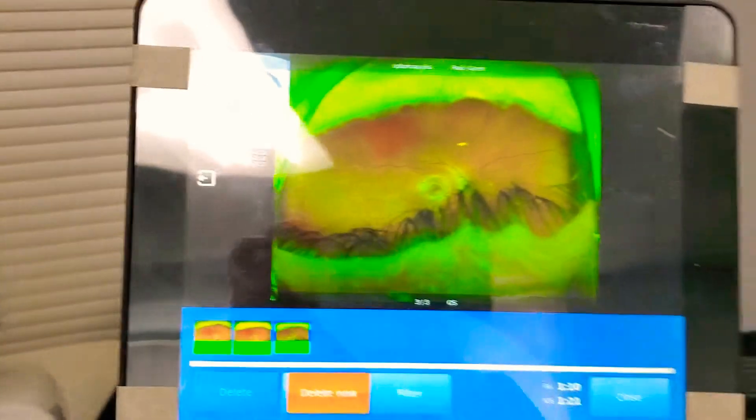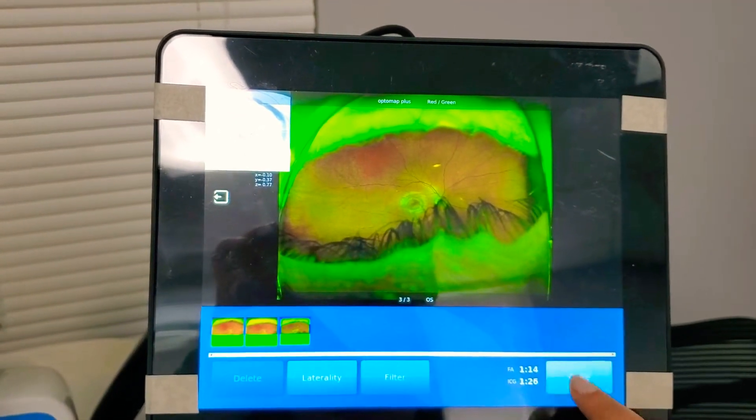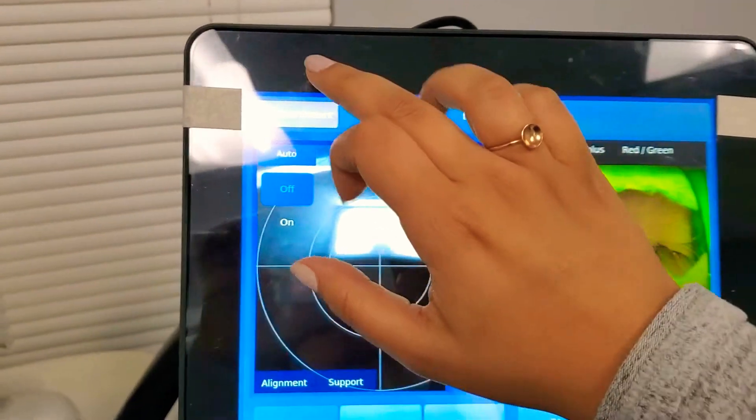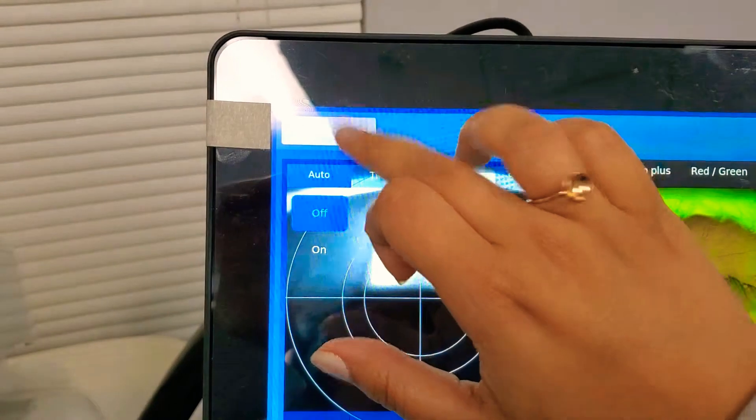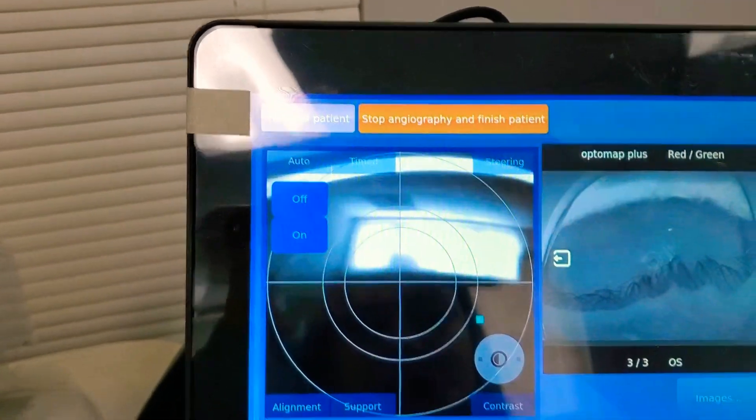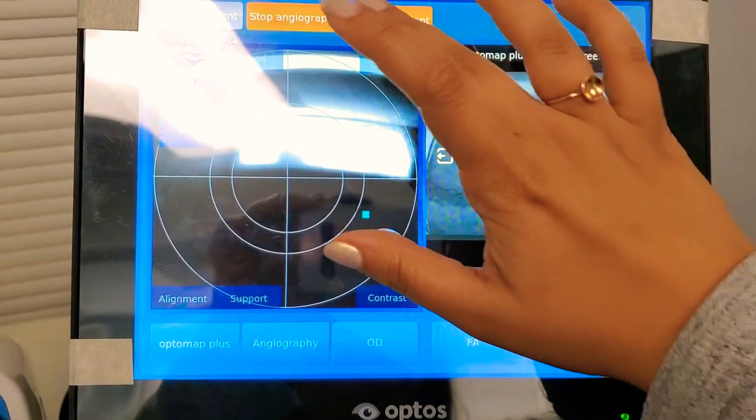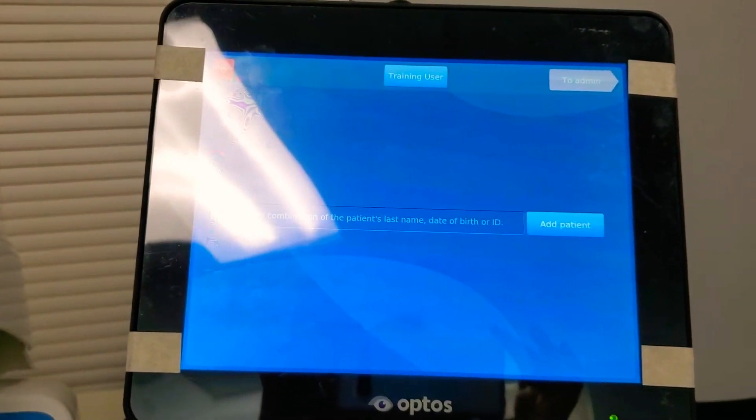And once we're all done. Go ahead and click. Hold on. Close. And we go here to finish patient. Oh. So we have to go ahead and stop the timer for this. Okay. And then from there you go to the computer and it will generate the photos for the physician to see.